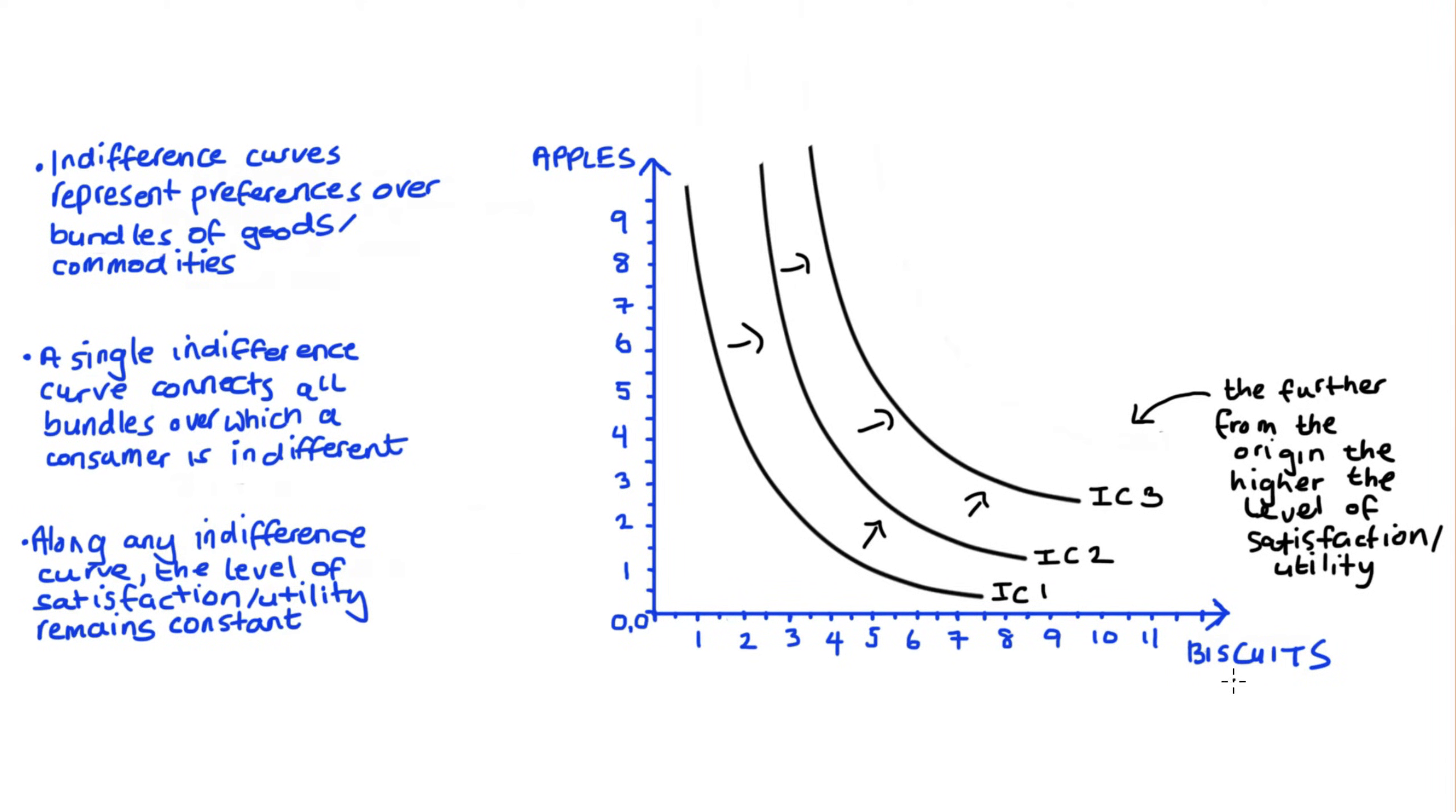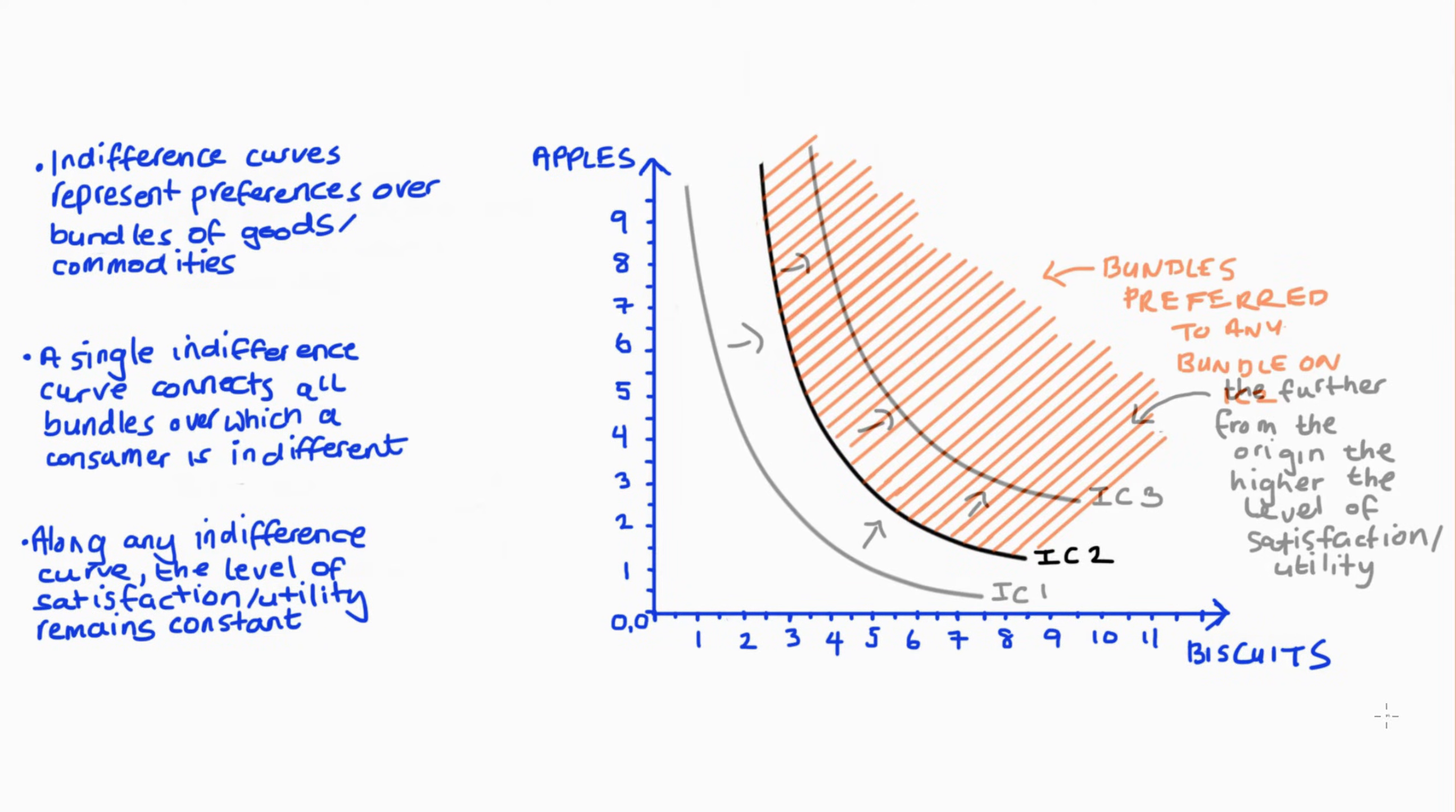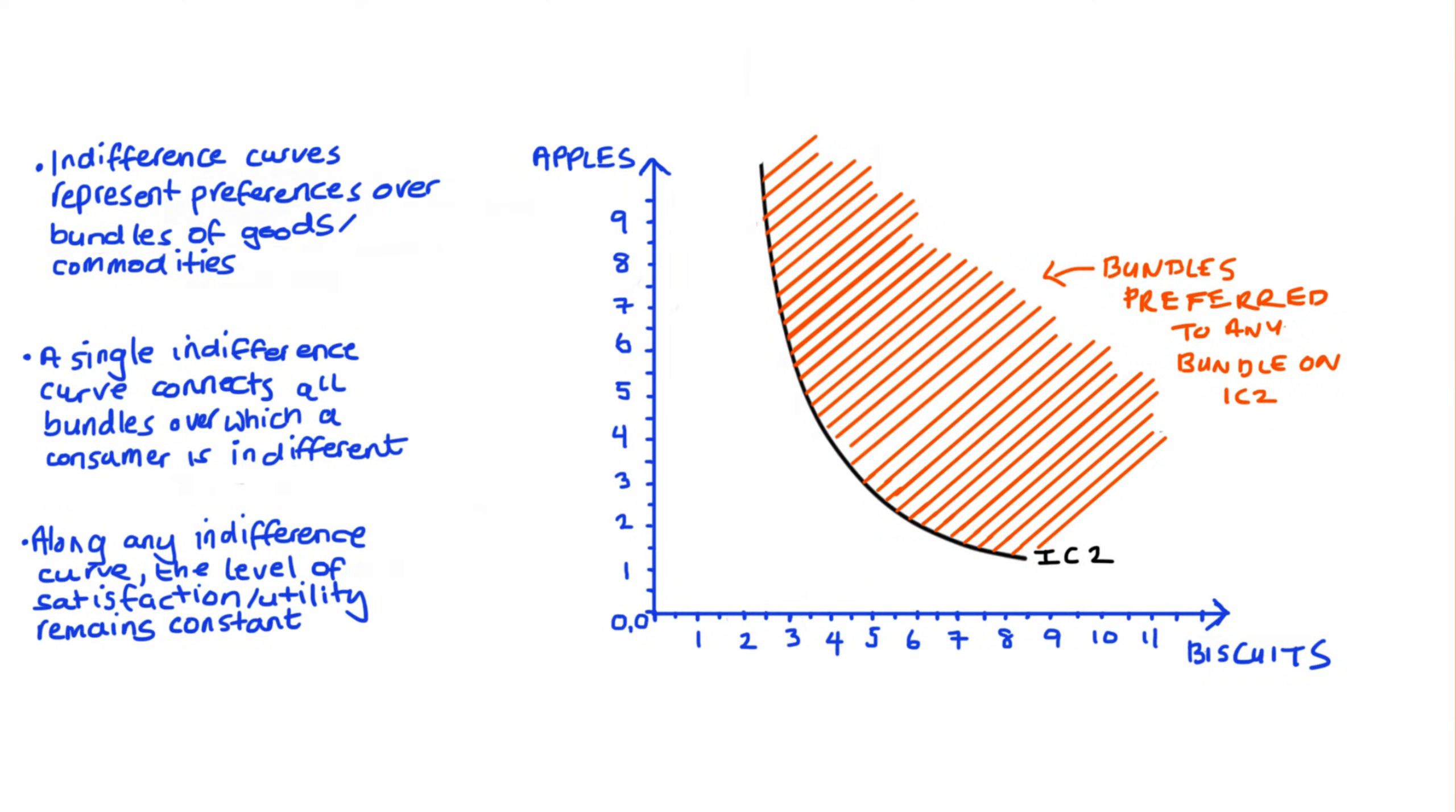To explain this in another very useful way, if we focus just on one curve, maybe IC2, if we shade above the line here, this shaded area actually isolates all of the bundles that are preferred to any bundle on IC2.